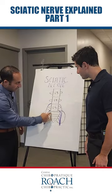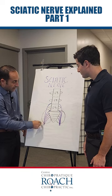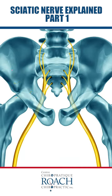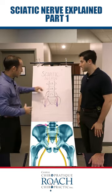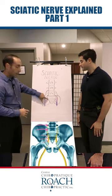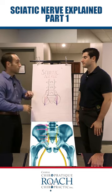There are five segments in the sacrum, and some of the sciatic nerve roots come from the first three segments of the sacral area. So the nerve roots that form the sciatic nerve are L4, L5, S1, S2, and S3.